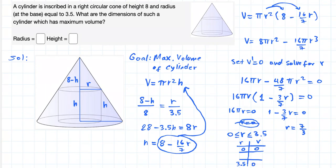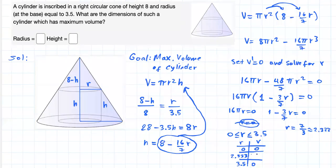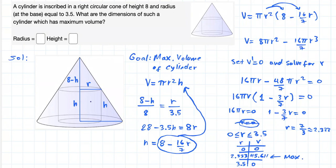If we substitute r equals 7 over 3, which is approximately 2.333, then we get a meaningful volume. Substituting this value of r into the volume function, we get approximately 45.611, which is meaningful. So clearly, this is the maximum volume, and r equals 7 over 3, approximately 2.333, should be the radius of the cylinder that will maximize the volume.